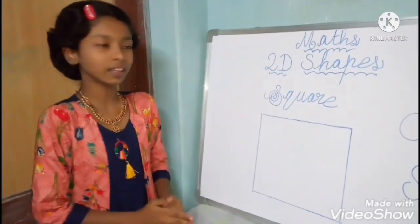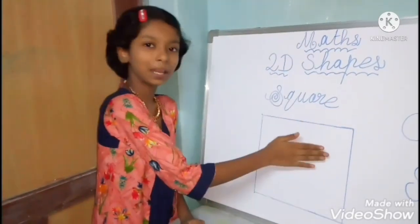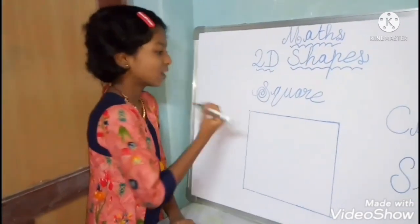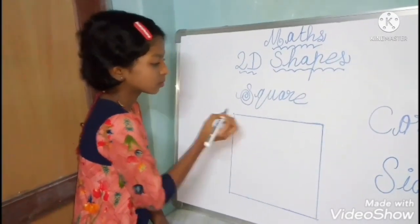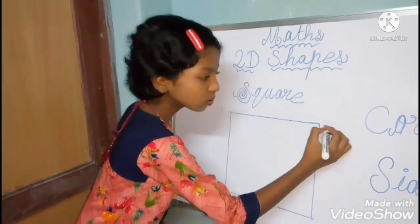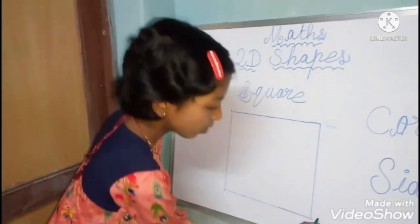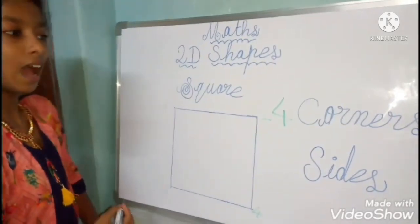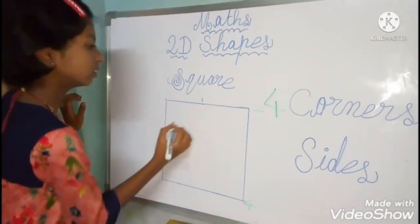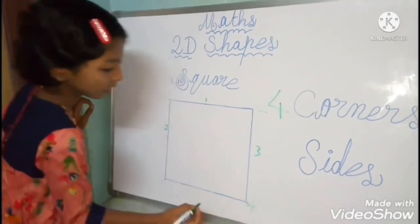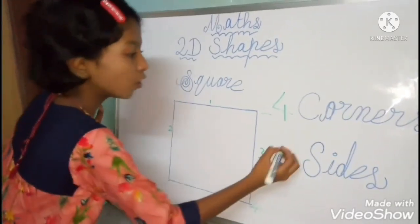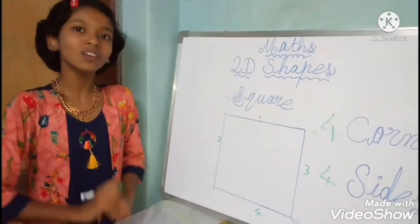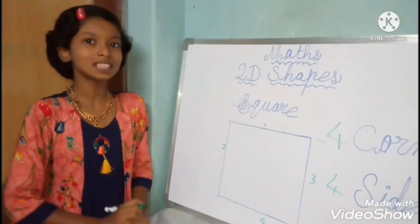I have drawn here one shape. This shape is named square. Square has one, two, three, four — four corners. And one, two, three, four — four sides. In square, there are four corners and four equal sides.